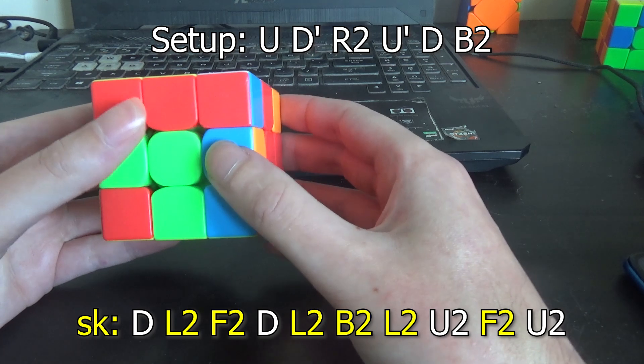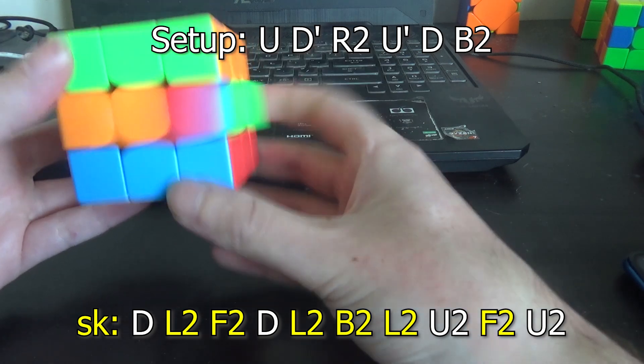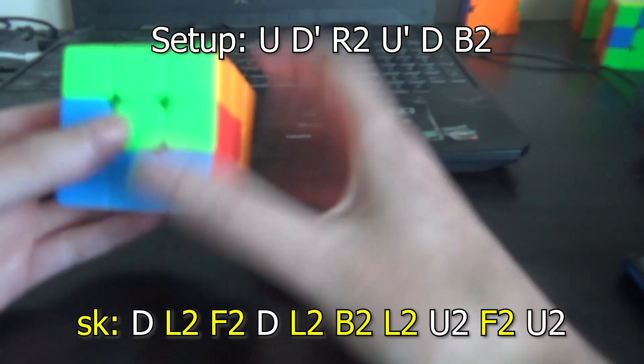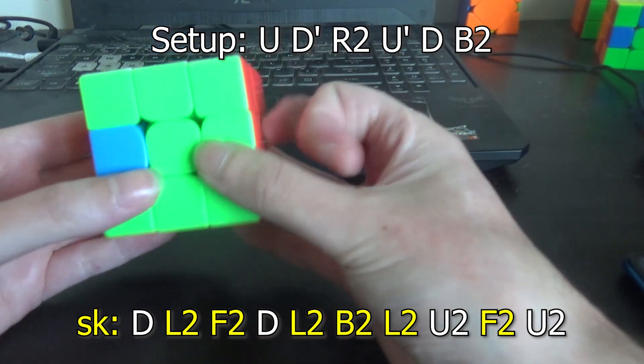So we'll try inserting an E prime at the first U2 instead. And that also does not work. So we'll try inserting it in the last move instead. And that also does not work.